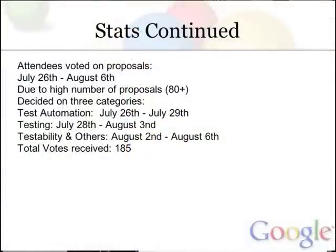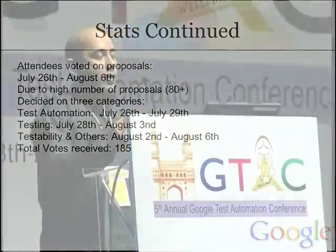Just a highlight about how many people voted on the speaker selection. We received about 185 votes spread across three categories: test automation, testing, and testability. Participation tapered off by the third category, but the first one was pretty much full. Hopefully it was a worthwhile exercise for you all, and we'd love your feedback on how it went.